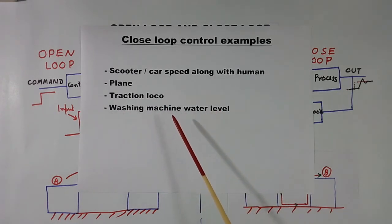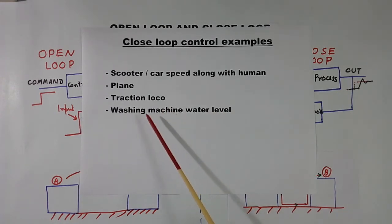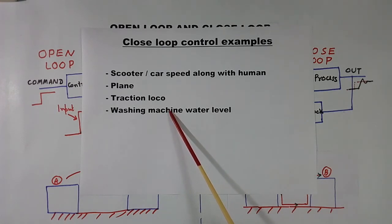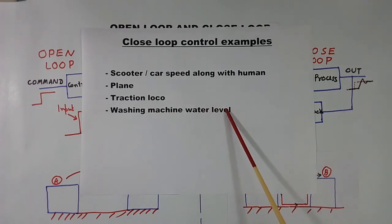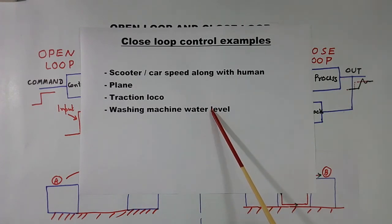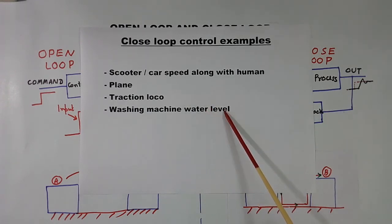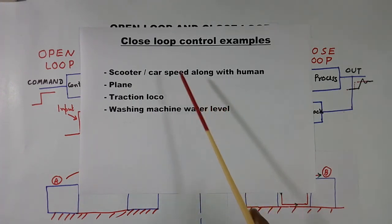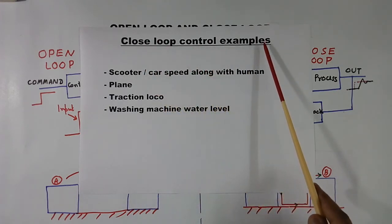Washing machine water level. Just now I told, washing machine motor is open control because depends upon voltage. But water level is closed loop control system. Suppose we set the water level 4. So there is a sensor in there. When water inflow is less, it will wait for long time till water level reaches 4th level. Then it will sense and it will close the valve. So washing machine water level, or our water tank water level sensor, they work like closed loop control system.